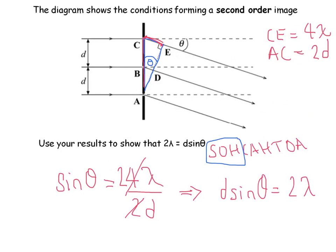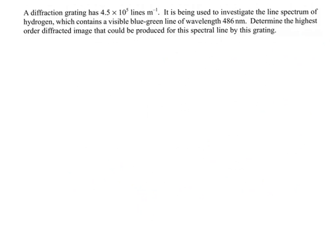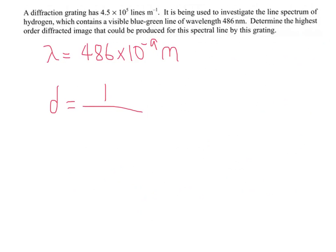Now there's a diffraction grating with a given number of lines per metre, and a wavelength of 486 nm. So lambda equals 486 times 10 to the minus 9 metres. We also need to find d — the distance between slits. Since we have the number of slits per metre, d is simply 1 over that value, which gives d equal to 0.22 times 10 to the minus 6 metres, or 2.22 times 10 to the minus 6 metres.